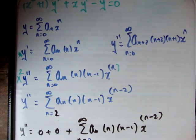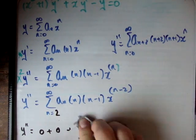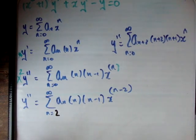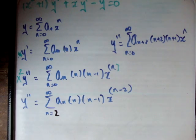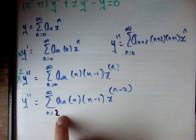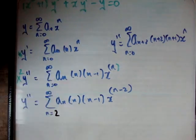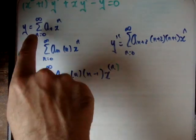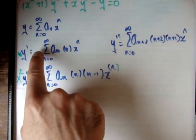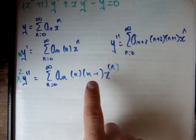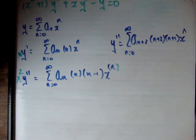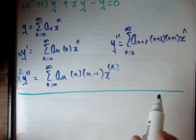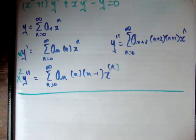Now we have the four power series which we need in order to solve this equation. The next thing we need to do is plug these straight into the equation itself. Here are the four: y, x times y prime, x squared times y double prime, and y double prime itself. So I'm going to draw a line underneath that and plug those straight into our differential equation.